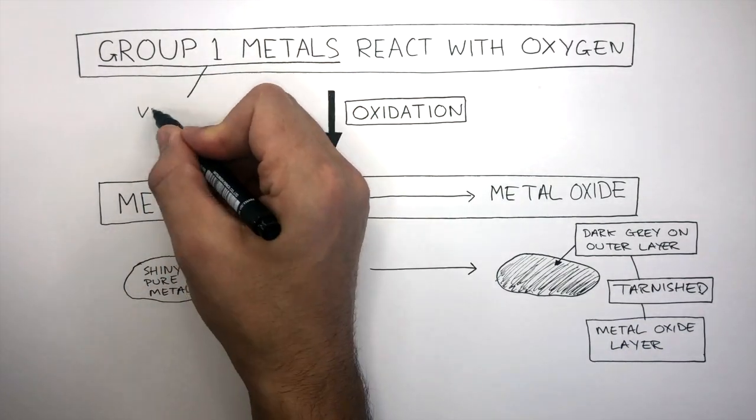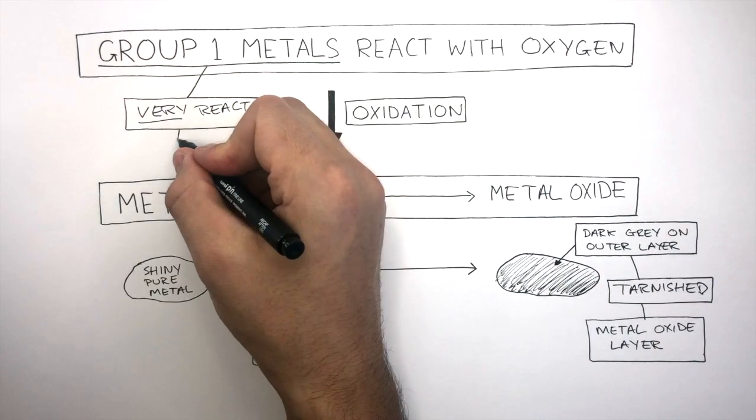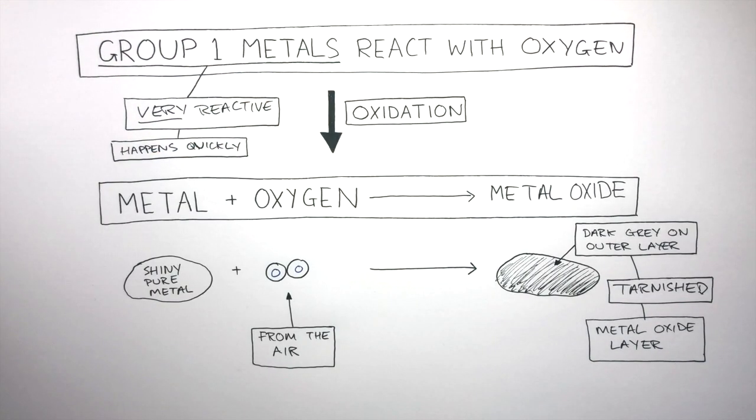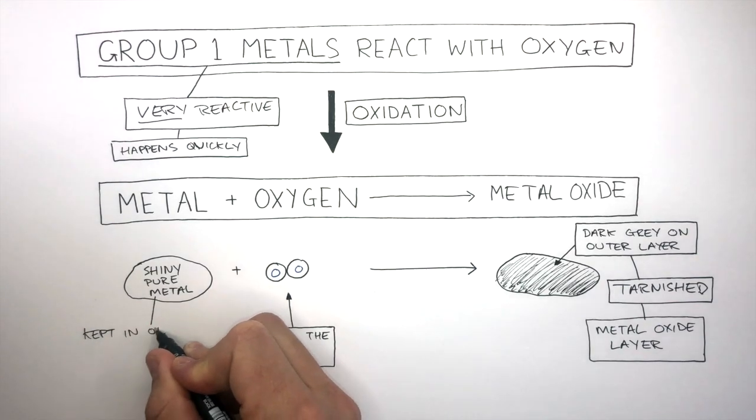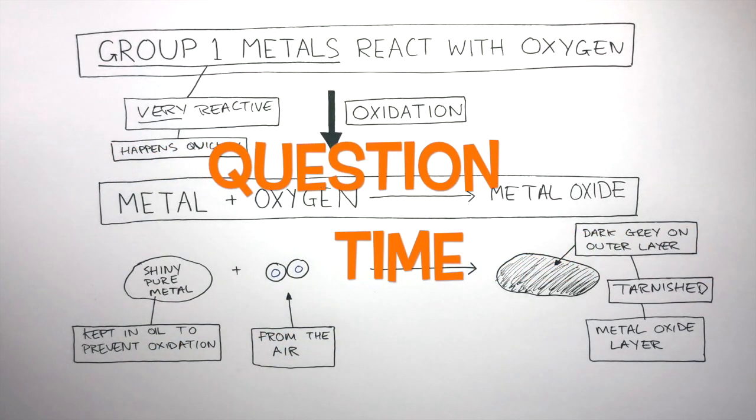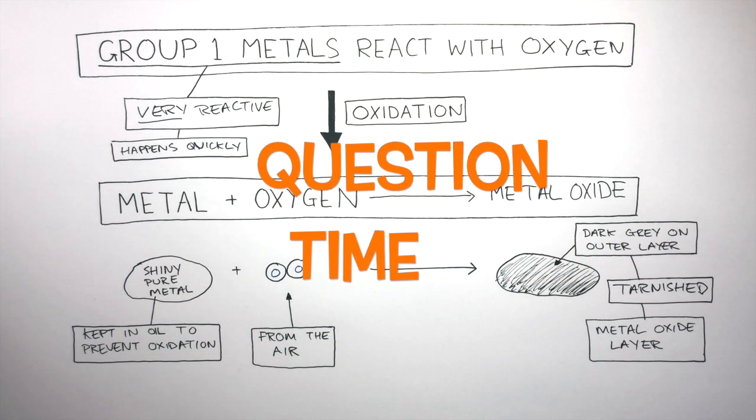Group 1 metals are very reactive, so this oxidation reaction happens quickly. Therefore, it is very important Group 1 metals are kept in oil to prevent oxidation. It's question time. Attempt these questions to check your understanding.